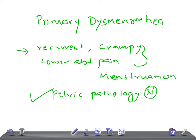The onset of pain generally does not occur until ovulatory menstrual cycles are established, and the maturation of the hypothalamic-pituitary-gonadal axis occurs.